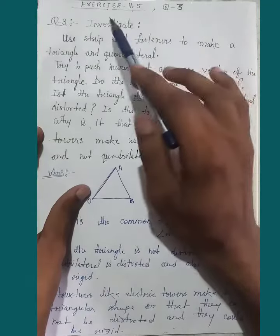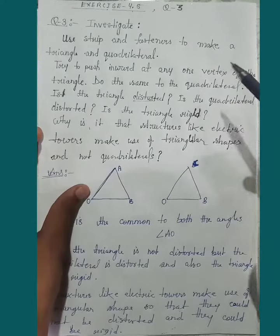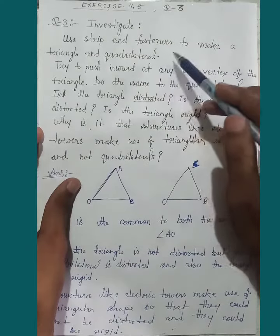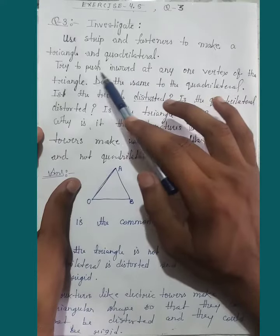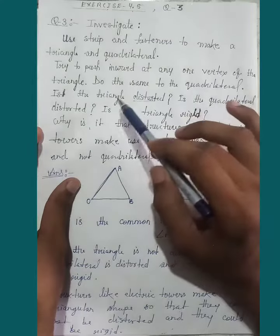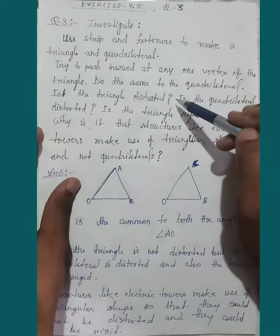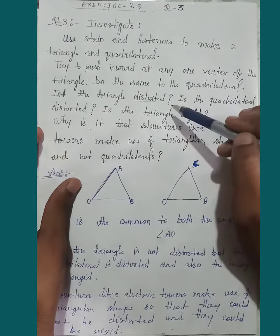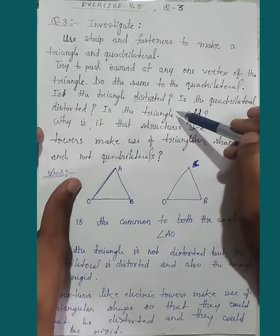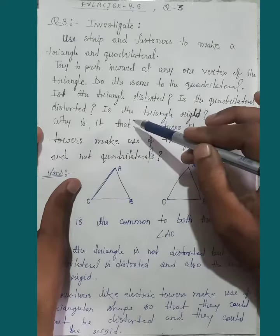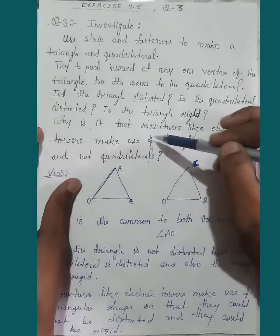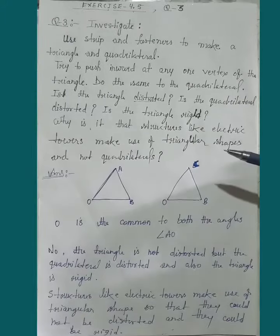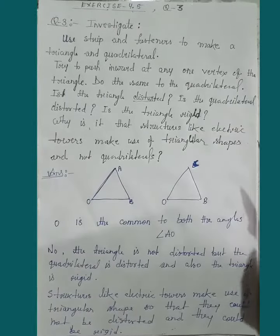Exercise 4.5, Question 3. Investigate: Use strips and fasteners to make a triangle and quadrilateral. Try to push inward at any one vertex of the triangle. Do the same to the quadrilateral. Is the triangle distorted? Is the quadrilateral distorted? Why is it that structures like electric towers make use of triangle shapes and not quadrilaterals?